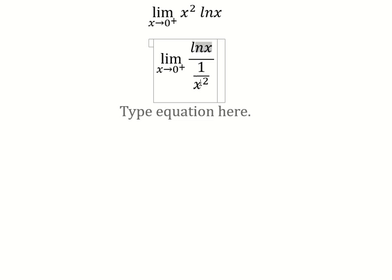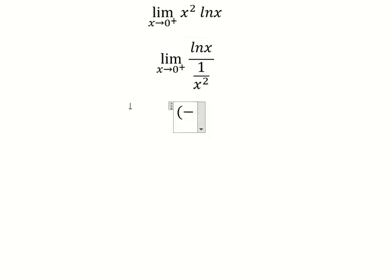The denominator, 1 divided by x² with x approaching zero, gives positive infinity. So we have negative infinity over positive infinity, which means we can use L'Hospital's rule.